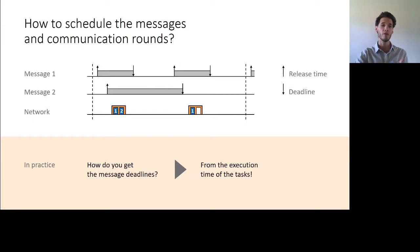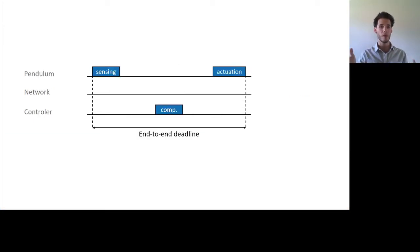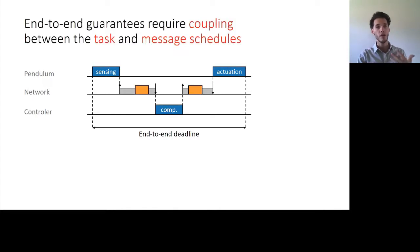Remember that when we look at the entire application, what matters is the end-to-end deadline. That is the deadline set by the latency of the start and end task in our application. So it's only once we have those tasks defined that we obtain our network release time and deadlines and therefore we can schedule the network. The takeaway being that in order to provide end-to-end guarantees at the application level, we need some sort of coupling between the schedules of the task and the schedules of the messages.